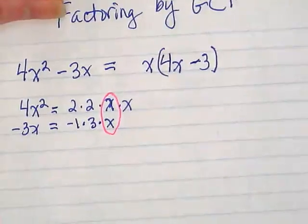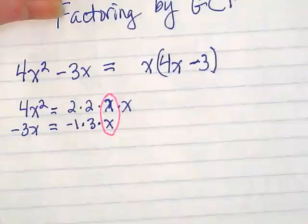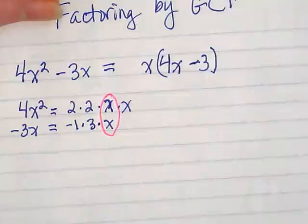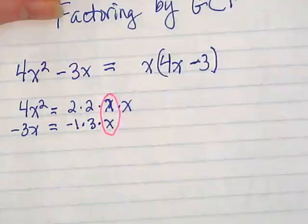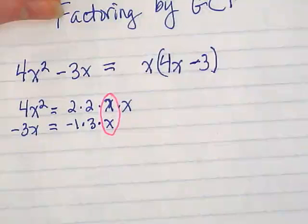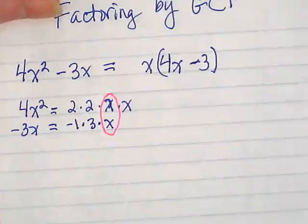When we factor by GCF we're basically taking the terms and we're dividing them by what they have in common. It's the opposite of the distributive property.